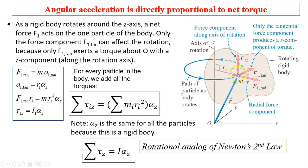The force can have three components: the tangential component, the radial component, and the z component. In order for this particle to rotate, the particle must have a torque — the torque makes the object rotate. So the tangential acceleration: M1 times a_tangential equals F_tangential. That's a tangential acceleration.